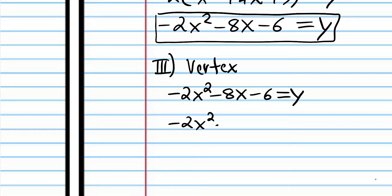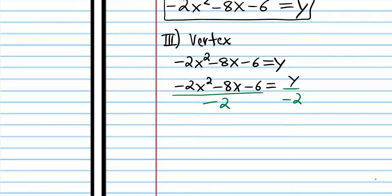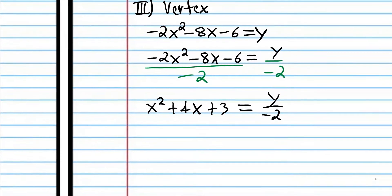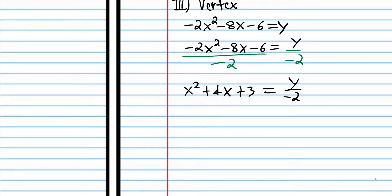So we're going to rewrite and divide each term. We don't really have to rewrite, but I want you to be absolutely clear what's going on. Negative 2x squared divided by negative 2 is x squared, negative 8x divided by negative 2 is positive 4x, and negative 6 divided by negative 2 is positive 3. Now we're going to put the 3 on the other side, and now we're ready to complete the square.